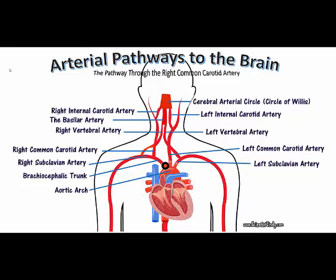One of the pathways it can take is to travel up the brachiocephalic trunk to the right common carotid artery, then to the right internal carotid artery, to the cerebral arterial circle — or the circle of Willis — that feeds oxygenated blood to the brain.